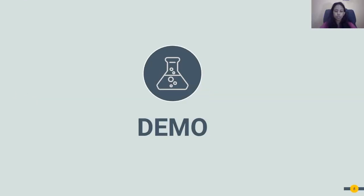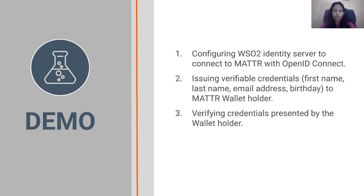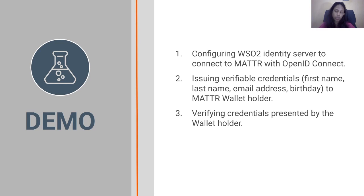Let's move into the demonstration. I will use the same example scenario. To make it easy to follow, I have divided the demo into three parts. First is configuring WSO2 Identity Server to connect to MATTR with OpenID Connect. The second is issuing verifiable credentials to the MATTR wallet holder — here, first name, last name, email address, and birthday will be offered as verifiable credentials. Finally, verifying credentials presented by the wallet holder.